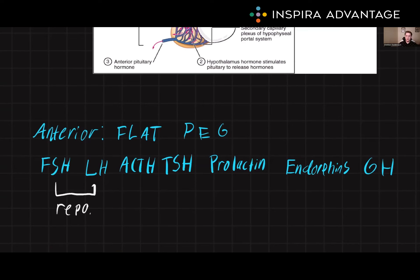Then we have ACTH, or adrenocorticotropic hormone. This regulates the adrenal gland, which produces hormones such as cortisol and adrenaline that play a role in the body's response to stress and regulation of blood sugar levels.